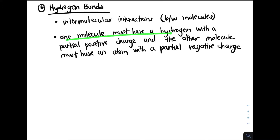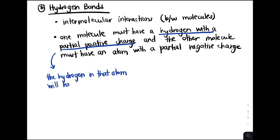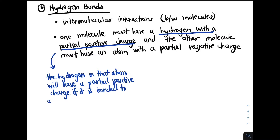So how do hydrogen bonds form? They form if one molecule has a hydrogen with a partial positive charge and another molecule has an atom with a partial negative charge. But how do we get a hydrogen with a partial positive charge? The hydrogen in that molecule will have a partial positive charge if it is bonded to an electronegative atom like oxygen, nitrogen, or fluorine.